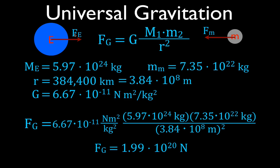The force on the Earth from the Moon is 1.99 times 10 to the 20 Newtons, and the force on the Moon from the Earth has the same magnitude. Sometimes students ask which one is M1 and which is M2 — it doesn't matter. You're just multiplying the two values, M1 times M2, so the order doesn't matter. When talking about planets and orbits, I typically use the central object as M1 and the orbiting object as M2 — like Earth and Moon here — but the result is the same either way.